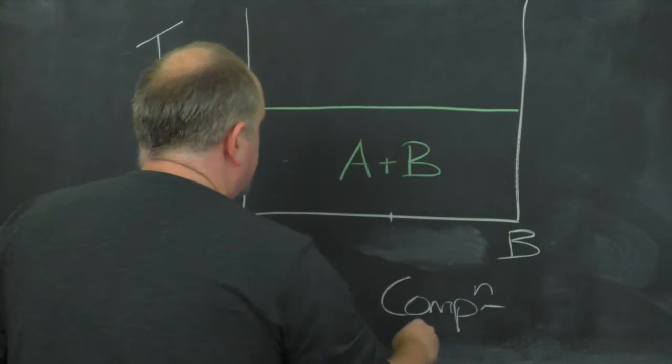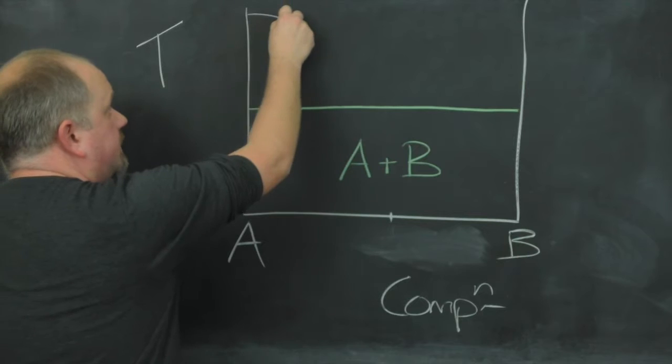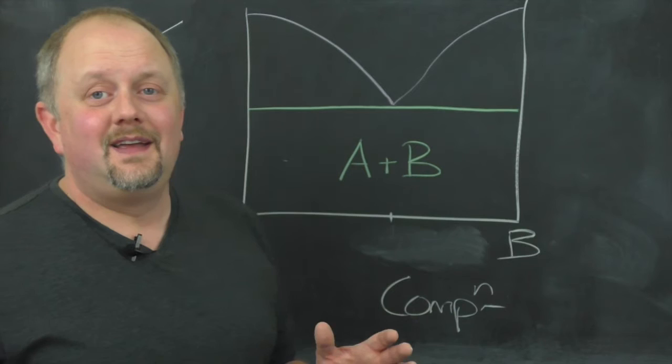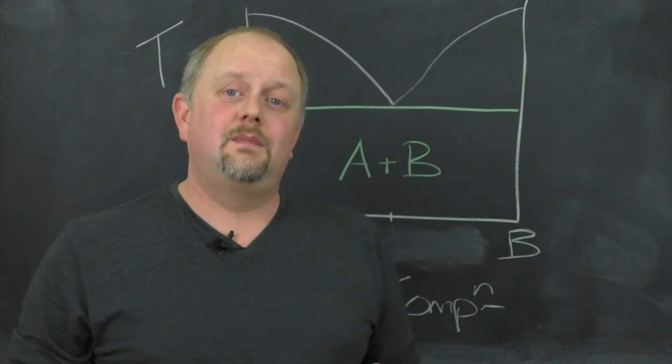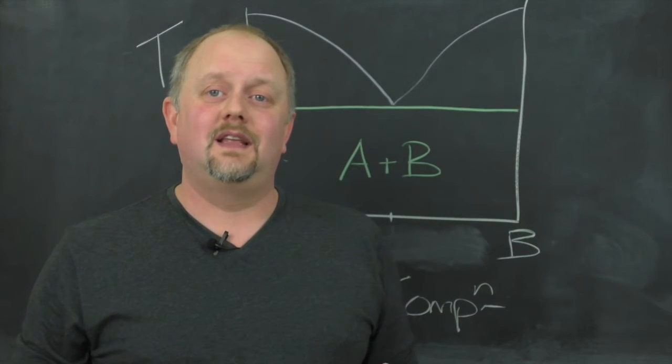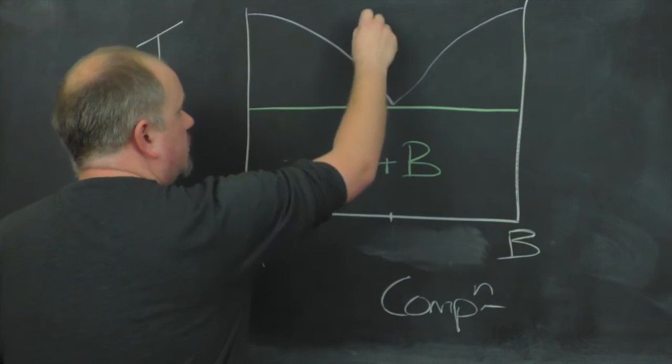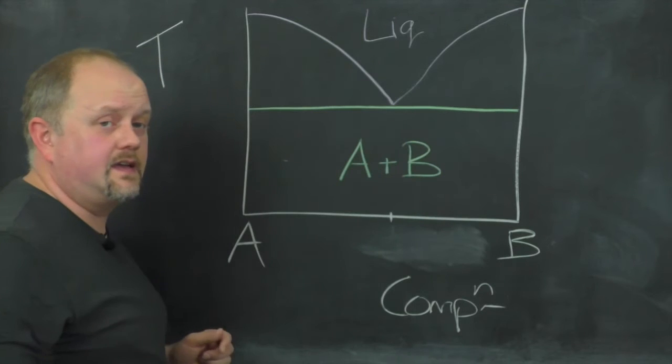Above that I'll draw in purple the liquidus line. This line represents the lowest temperature at which the system is completely liquid. So above this line at all temperatures and all compositions we just have a single liquid phase.